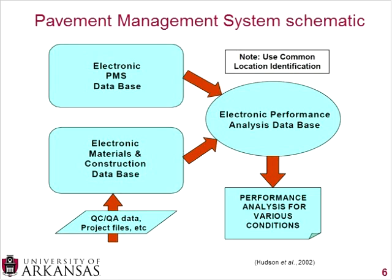The electronic PMS database captures how your pavements are performing — whether you're measuring the International Roughness Index, doing visual surveys, that type of information goes in there. When you combine those databases, you can analyze what construction techniques and materials affect pavement performance. Once you start comparing those numbers, you can get performance analysis for various conditions. The more information you put in, the better information you get out. It's always overwhelming to begin, but once you start, you continue gaining more information and over time it becomes much more robust and effective.